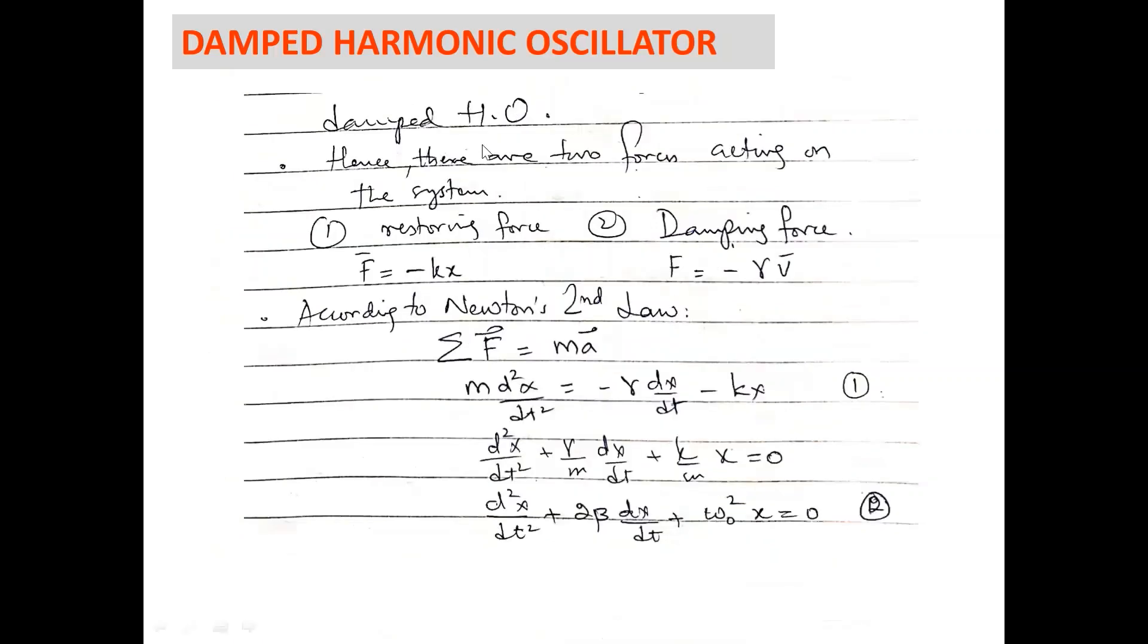Now, to write the equation of motion for such system, there are two forces acting on the system. One is restoring force and the second is damping force. For restoring force, f equals minus kx is the equation of motion. And for the damping force, we have f equals minus gamma v.